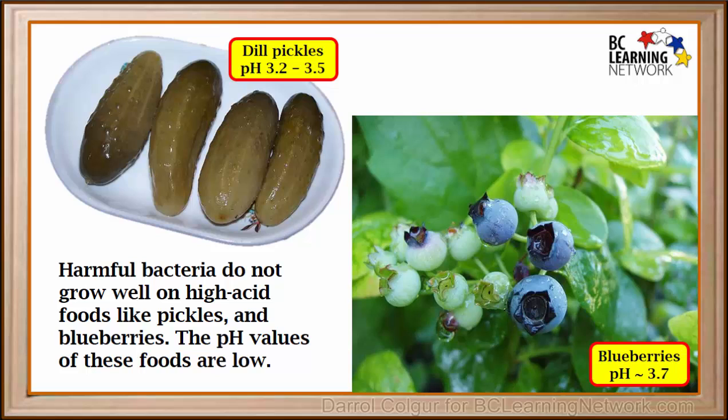Some foods have quite low pH values. Harmful bacteria do not live and grow at the low pH levels of these high acid foods. Here are some pickles, which are kept in vinegar and salt, and some blueberries. Notice the pH levels of these are quite low.